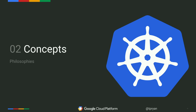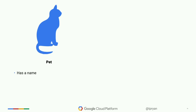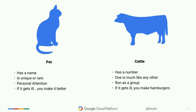There are some concepts to keep in mind when doing containers and Kubernetes. The first is 'cattle, not pets.' A pet has a name, it's unique, it gets personal attention, and if it gets ill you stay up all night. Cattle have a number, one is pretty much like any other, they're interchangeable, you run them as a group, and if one gets ill you make hamburgers. We want our servers to behave like cattle.